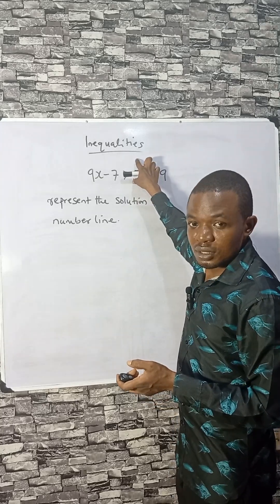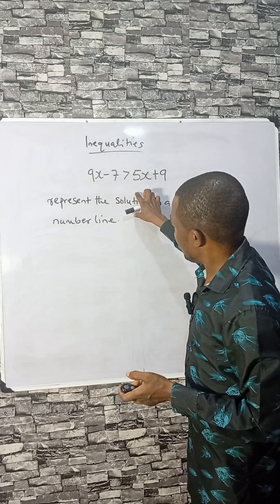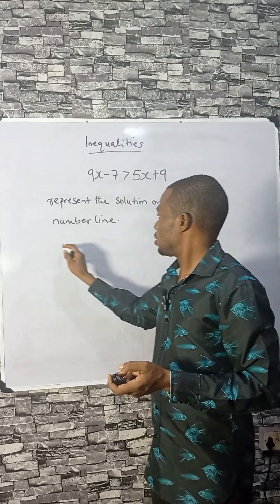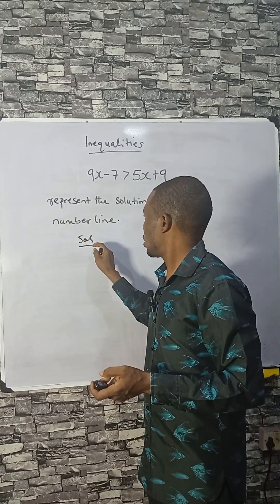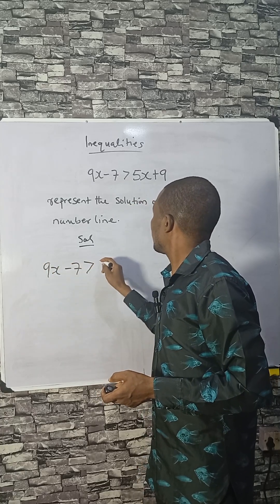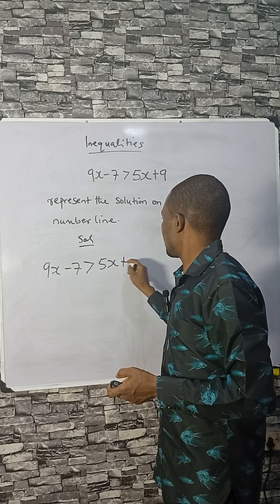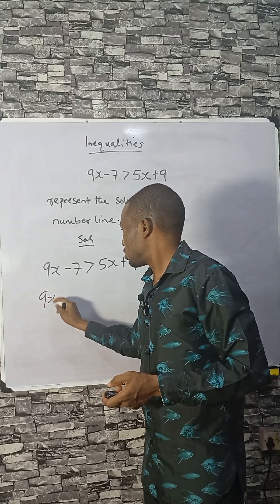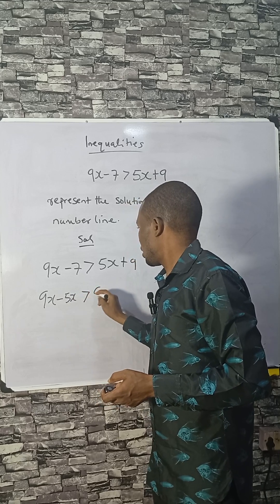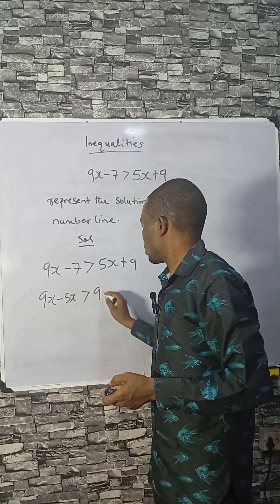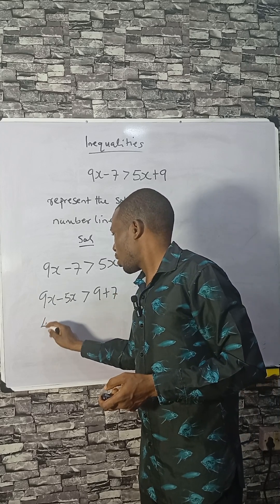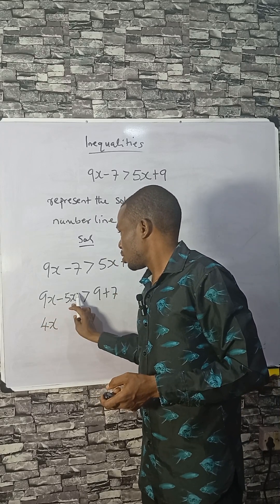The question says solve this and represent the answer on a number line. This is an inequality. Let's see how we can solve this: 9x minus 7 greater than 5x plus 9. Collecting like terms, 9x minus 5x is greater than 9 plus 7.